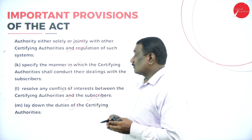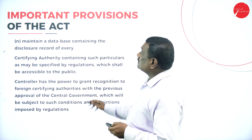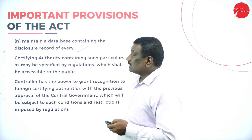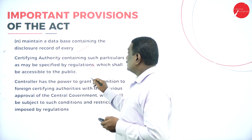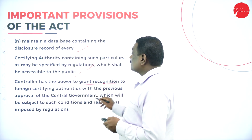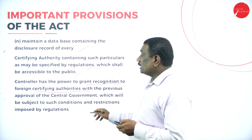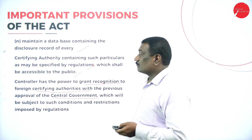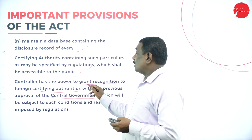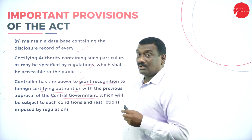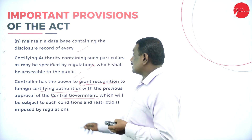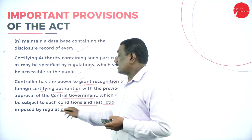The CCA also lays down the duties of the certifying authorities and maintains a database containing the disclosure record of every certifying authority with particulars specified by regulation, which shall be accessible to the public. The controller has the power to grant recognition to foreign certifying authorities with the previous approval of the central government, subject to such conditions and restrictions imposed by the regulations.